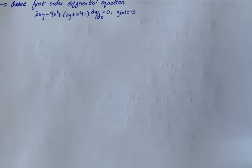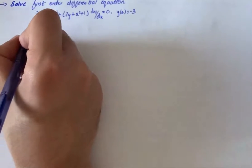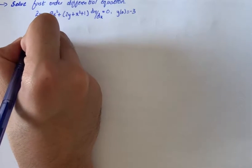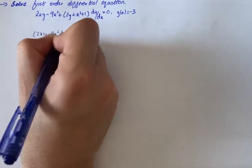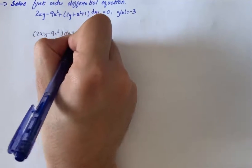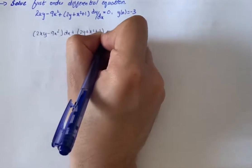The question says: find the solution for the first order differential equation. The equation is given as (2xy minus 9x squared) plus (2y plus x squared plus 1) times dy/dx equals zero. First of all we will collect like terms, giving us (2xy minus 9x squared) dx plus (2y plus x squared plus 1) dy.